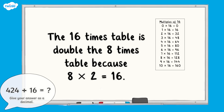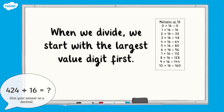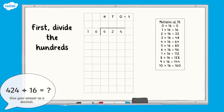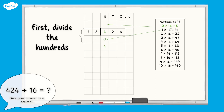Unlike with addition, subtraction and multiplication, where we start with the smallest value digit, when we divide, we start with the largest value digit. In this three-digit number, that is the hundreds digit. So first, we're going to divide the hundreds. Four hundreds divided by 16 equals zero hundreds, with four hundreds remaining. Our quotient has zero hundreds, so we do not need to write it in, because we do not use leading zeros in whole numbers. We subtract the zero hundreds from the four hundreds we started with, which leaves four hundreds. These are exchanged for forty tens and are added to the two tens from our dividend, giving us 42 tens.